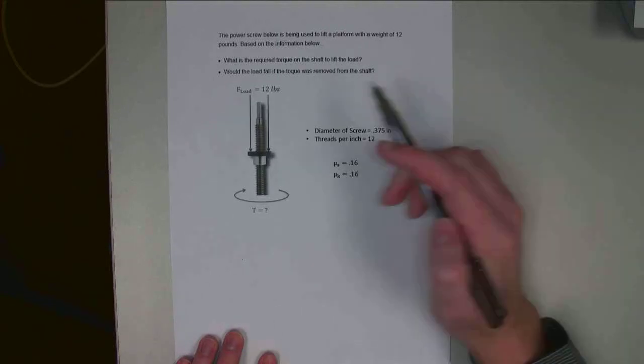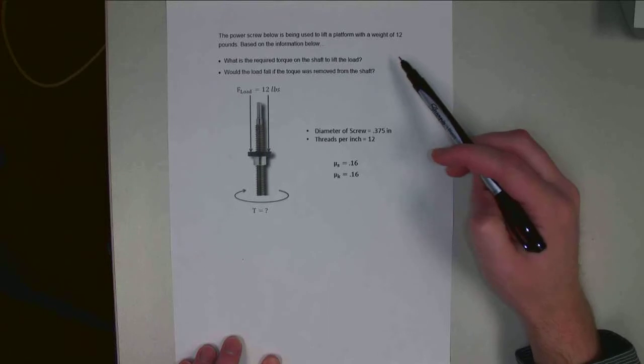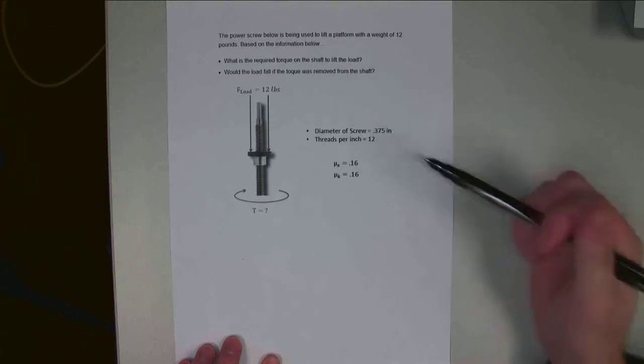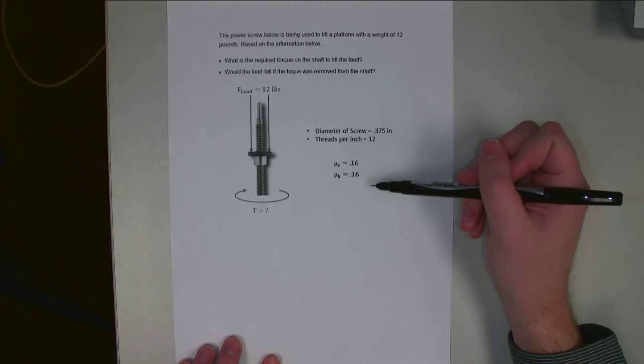Hello. For this problem, we have a power screw being used to lift a 12-pound platform. Based on the information below, I've got the diameter of screw, threads per inch, and the coefficients of friction here.